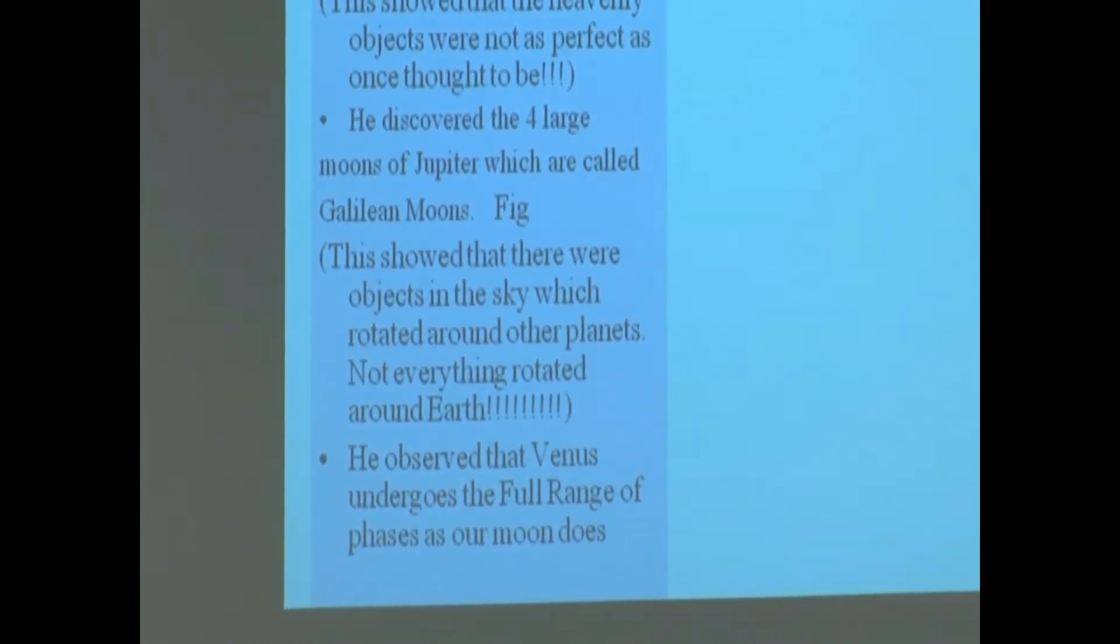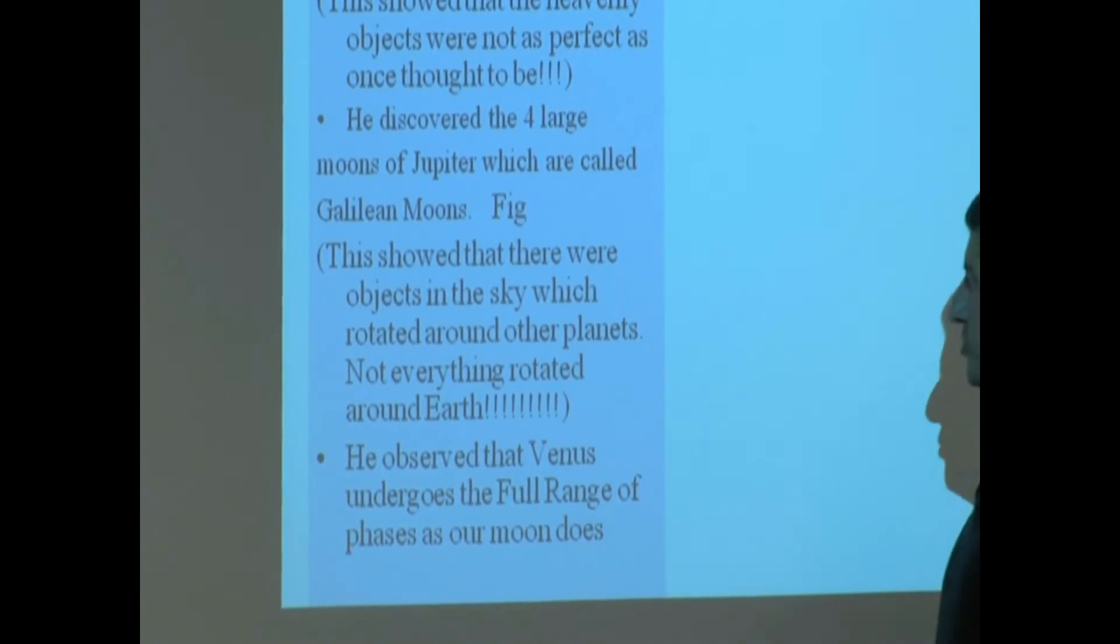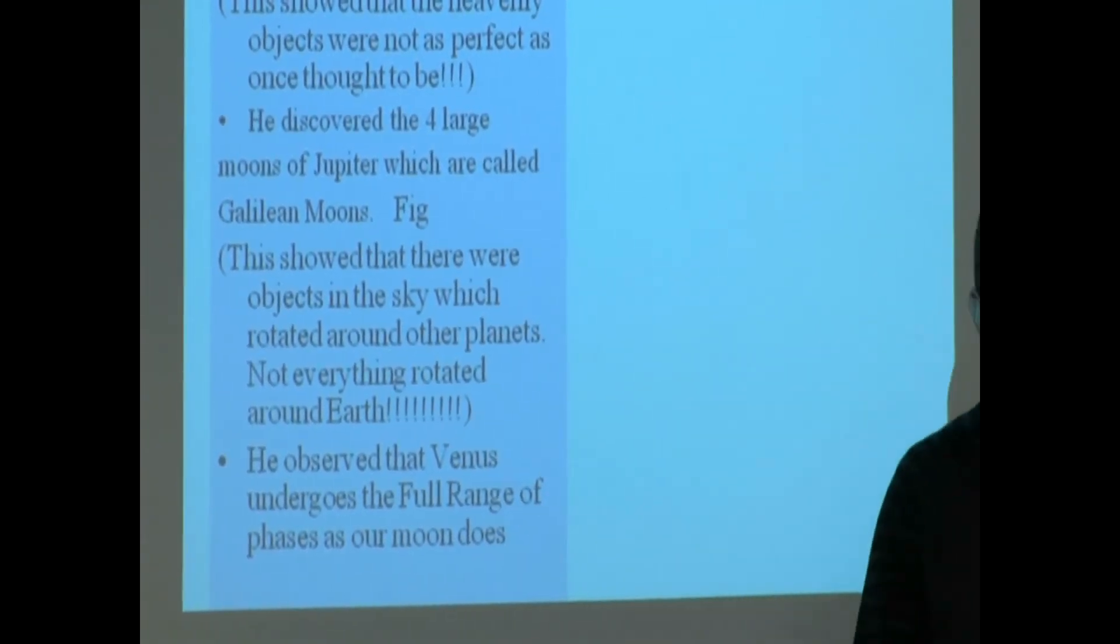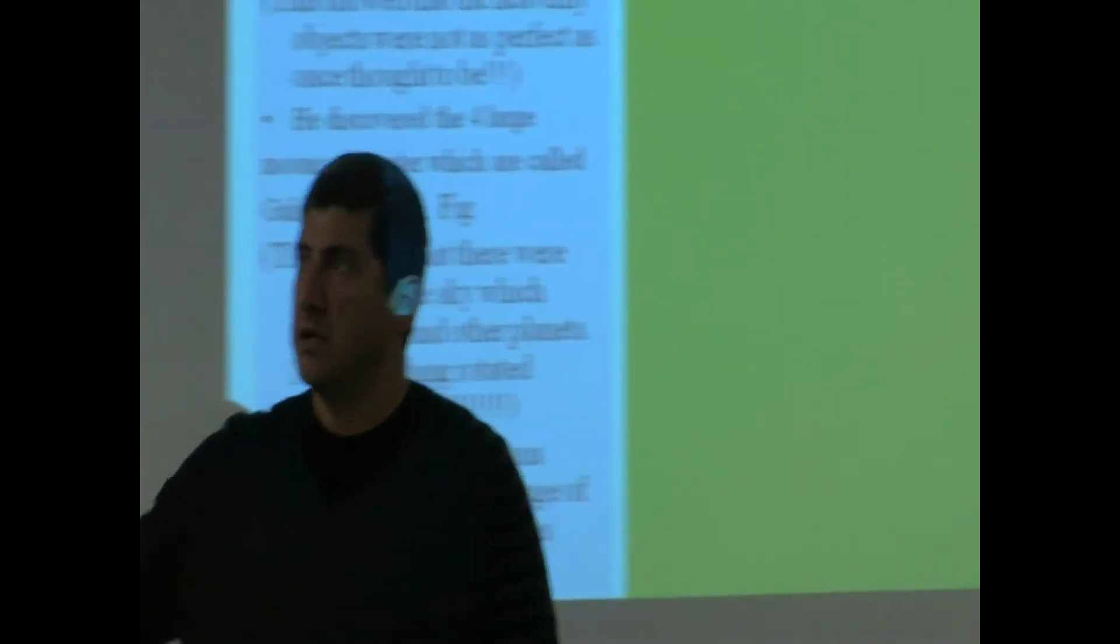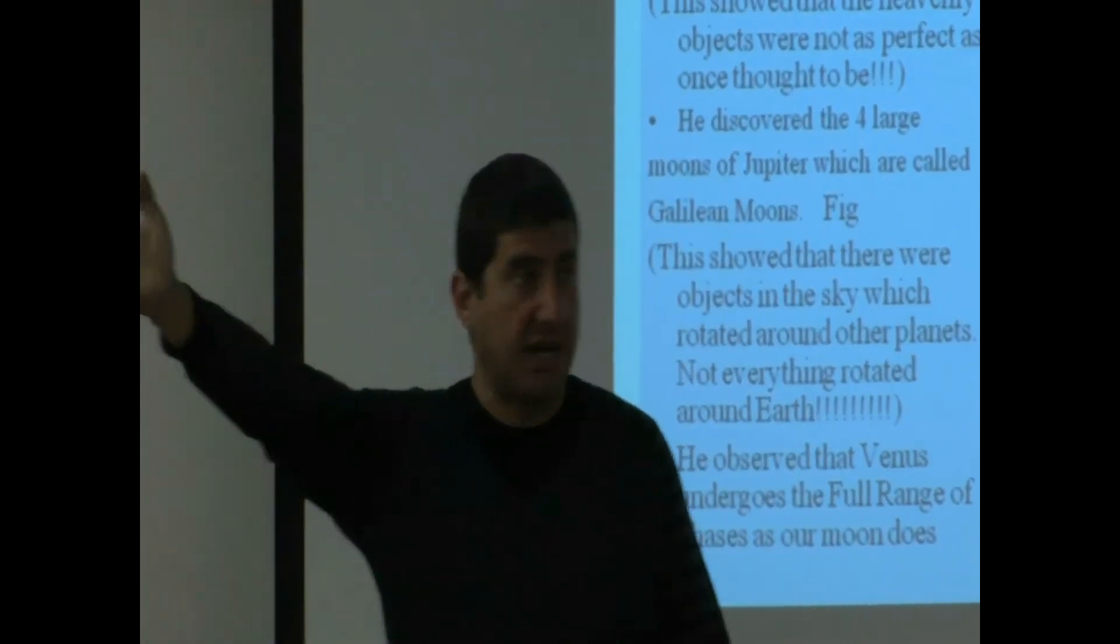This showed that there were objects in the sky which rotated around other planets. Not everything had to rotate around the Earth. One of his greatest observations, he observed that Venus undergoes the full range of phases as our Moon does. So, basically, you can even do this today. You can look at Venus in the western sky at night.